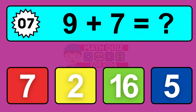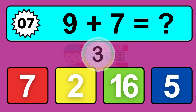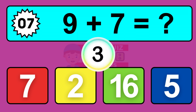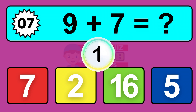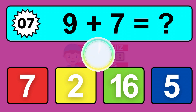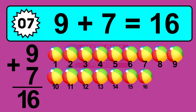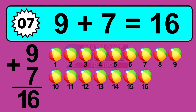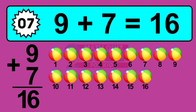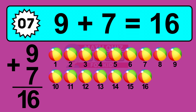Question 7. 9 plus 7 equals what? Let's count it: 1, 2, 3, 4, 5, 6, 7, 8, 9, 10, 11, 12, 13, 14, 15, 16.